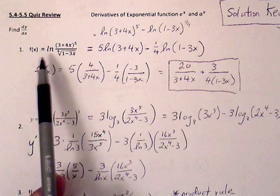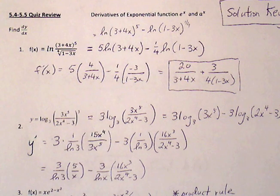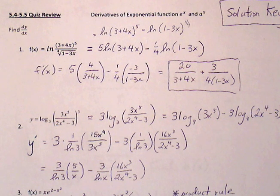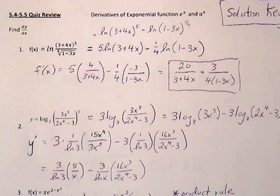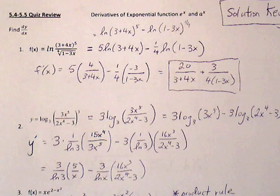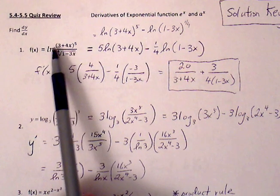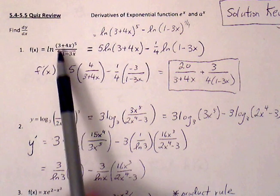We'll start off with number one: f of x equals natural log of 3 plus 4x to the 5th, all over the 4th root of 1 minus 3x. This is log base e, and as with any log expression, if we can expand using the product, quotient, or power property, then things will be a lot easier when we're ready to find the derivative.